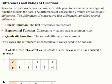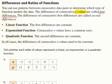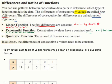What about the differences in ratios of functions? You can use patterns between consecutive data points to determine which type of function models the data. The differences of consecutive y values are called first differences, and the differences of consecutive first differences are called second differences. Linear functions have constant first differences. Exponential functions have consecutive y values with a common ratio — multiplied or divided by the same number. Quadratic functions have constant second differences.